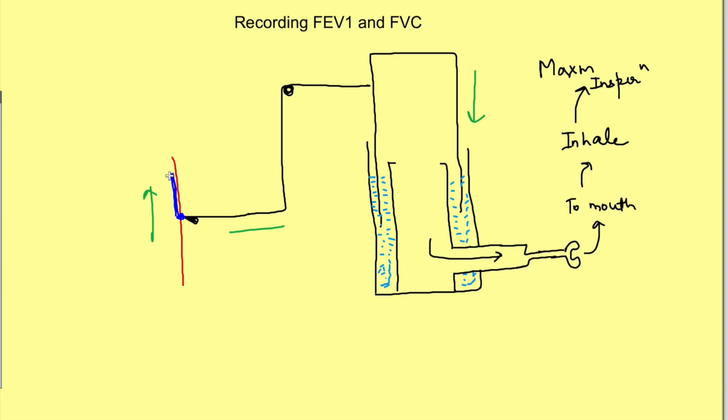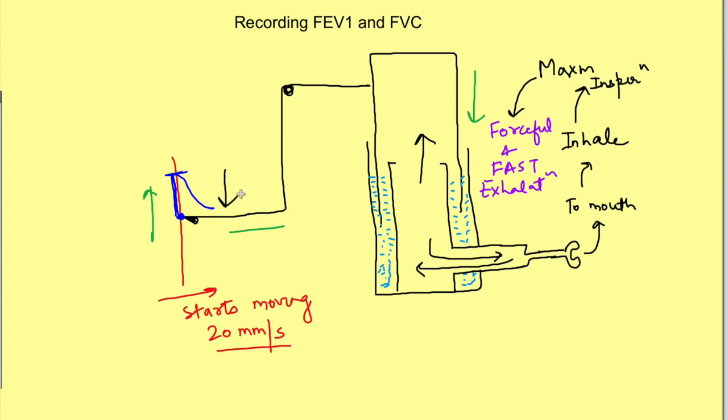At that point, we ask them to exhale maximally and forcefully - as forcefully and as fast as they can. Immediately, we start the spirometer at a speed of 20mm per second. Because the spirometer is now moving and they're exhaling, air goes back into the spirometer, the drum goes up, and the marker goes down, creating this kind of line.